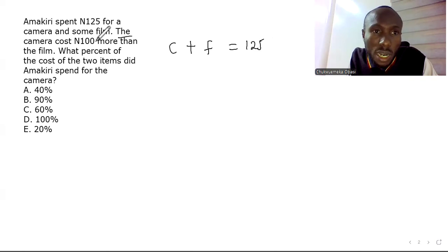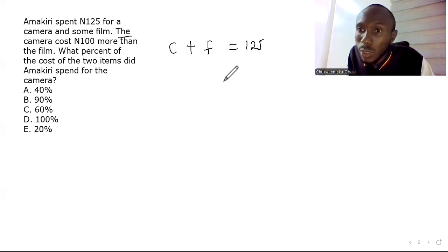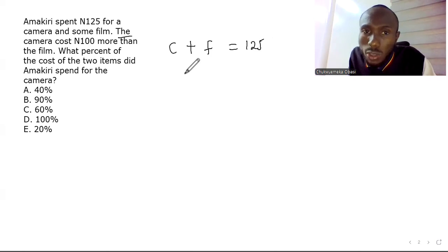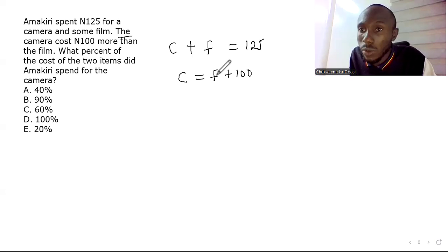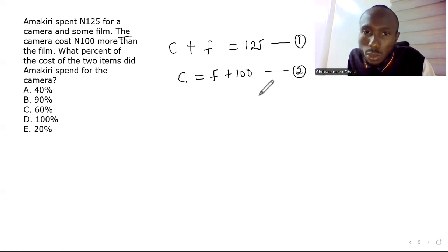The camera costs 100 naira more than the film. So if the film costs, say, 20 naira, the camera costs 120 naira — just an extra 100. This gives us equation two: c = f + 100.